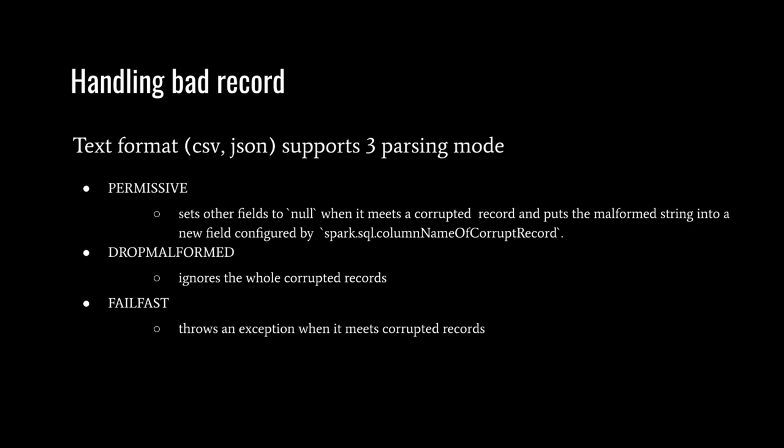Spark has native support for handling bad records. When reading text-format data, you can specify three different policies. The first is permissive: Spark will set other fields to null when it meets a corrupted record and put the malformed string into a new field configured by spark.sql.columnNameOfCorruptRecord. The second policy is dropMalformed: Spark will just ignore the corrupted records. The third policy is failFast: Spark will throw an exception when it meets a corrupted record.